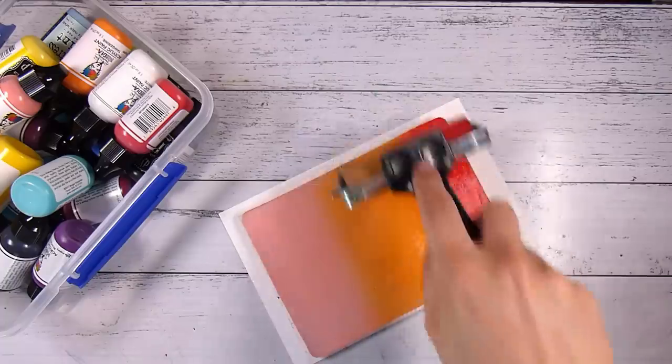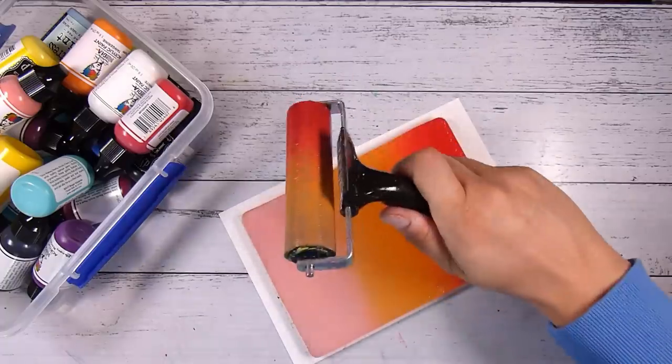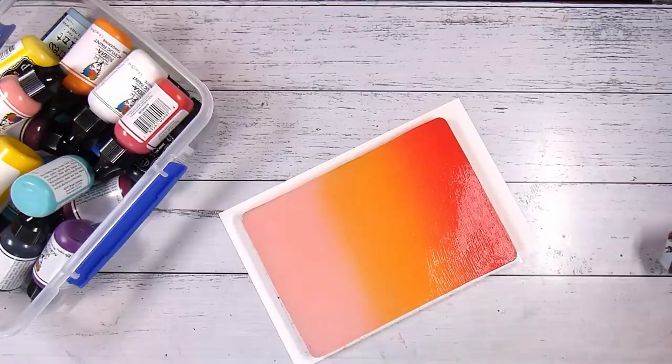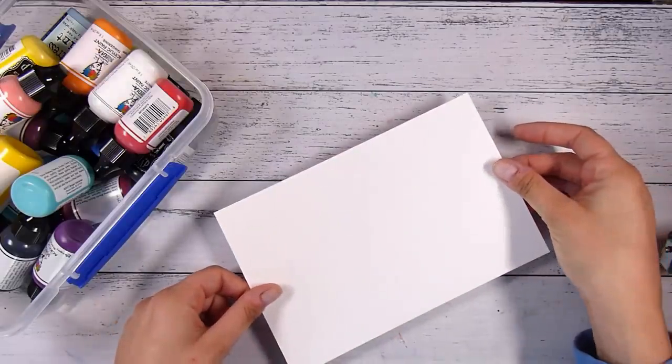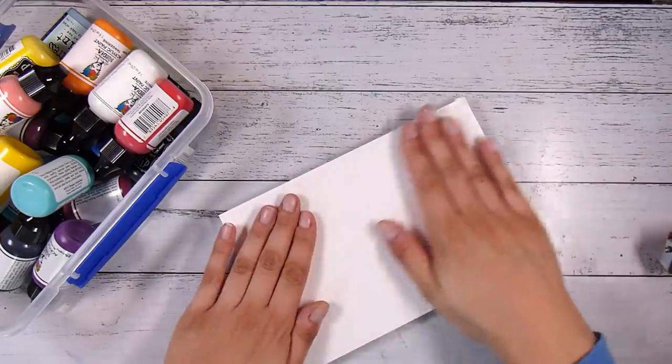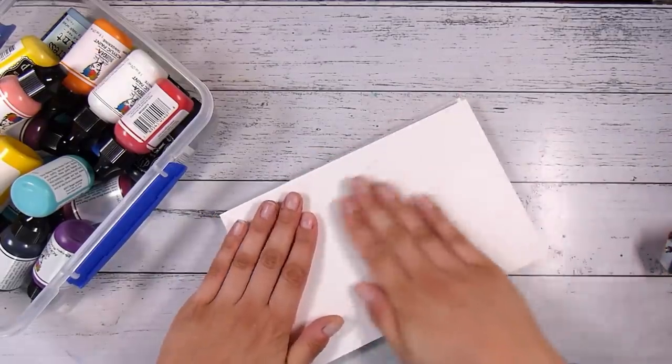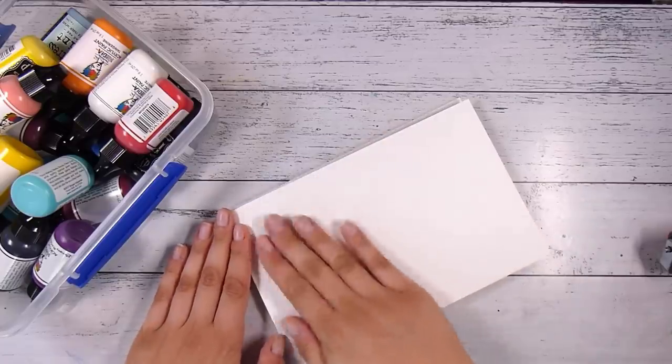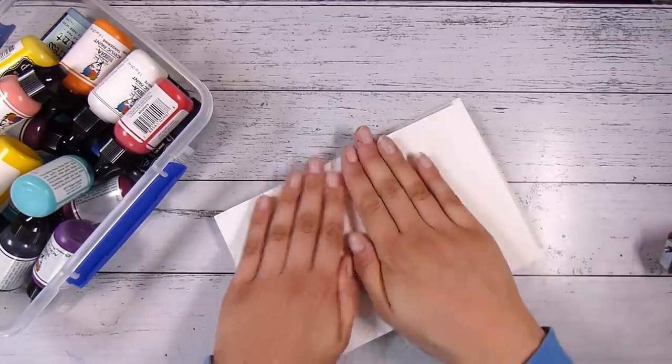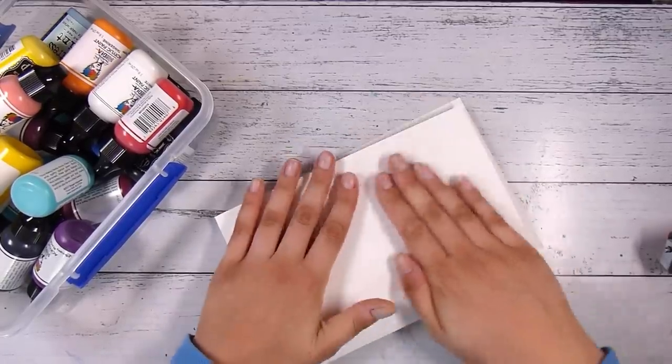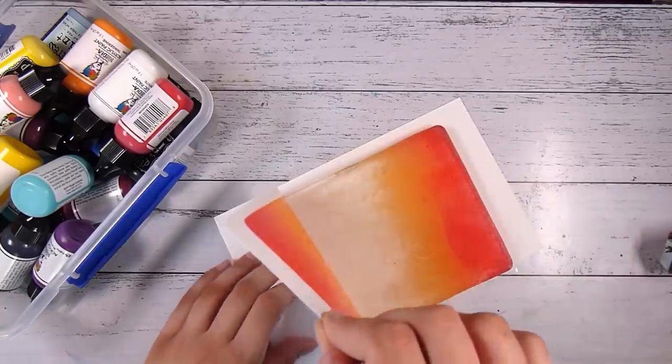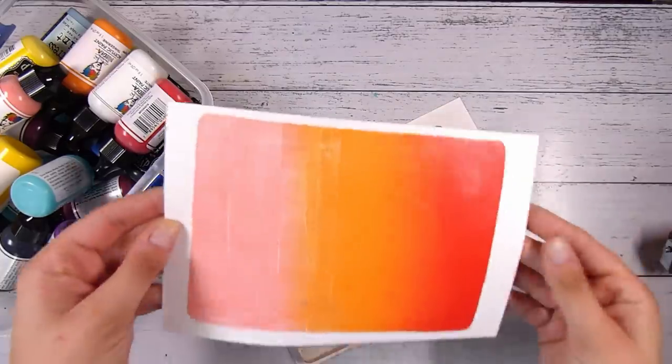I'm going to go relatively speedy through these options, but I just want to show you that there are lots of ways. First up, I'm using a jelly plate and I have got some pink, some orange, and some red acrylic paint. I popped a little dot of each one down on my gel plate and then spread it out with my brayer, popped a piece of paper on top so that I can get a really nice print.